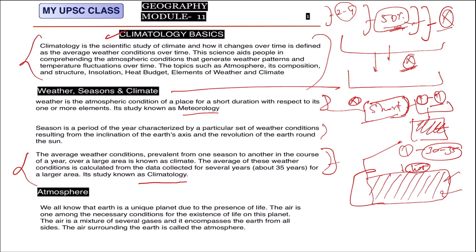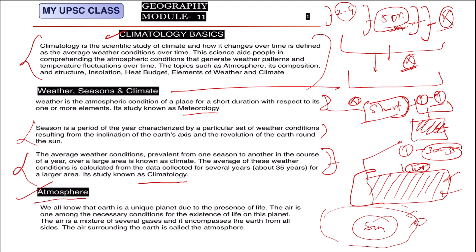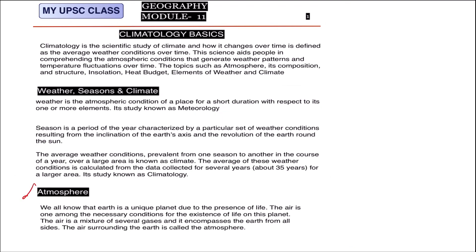What about seasons? A season occurs due to the revolution of the Earth around the Sun. As covered in basic videos, the Earth revolves around the Sun and due to that we get variations — spring, winter, summer, and autumn seasons. So the smallest unit is weather, then we get seasons, and collectively those seasons create the bigger concept of climate. This is the basic idea of climatology.